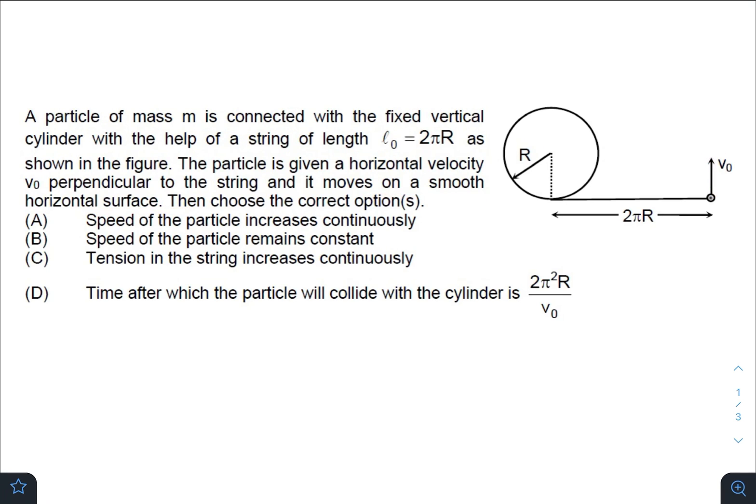The particle is given a horizontal velocity v₀ perpendicular to the string and it moves on a smooth horizontal surface. Then choose the correct options. Take some time, try this question on your own and let me know in the comments which options you are getting.